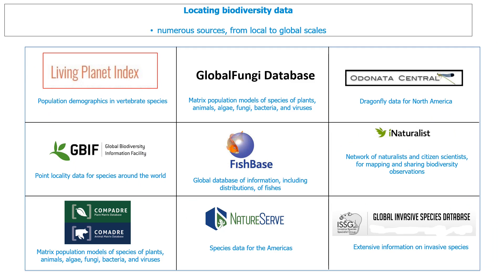There are numerous other sources of biodiversity data from local to global scales. Some of these are geospatially referenced data, some are static information. The Living Planet Index, mentioned in the first lecture, is a data portal including information about the size of populations of selected vertebrate species from various parts of the world since 1970. The Global Biodiversity Information Facility, GBIF, has point locality data for species around the world based on collected specimens and observations. Compadre and Comadre databases contain matrix population models of plant and animal species, as well as algae, fungi, bacteria, and even viruses.